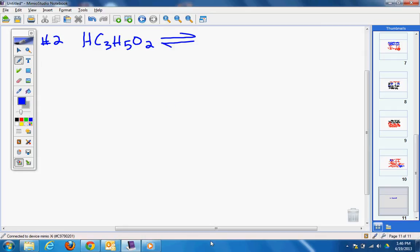What equation would we be working with? HC₃H₅O₂ gives H⁺ plus C₃H₅O₂⁻. Again, plug it into our ICE box.